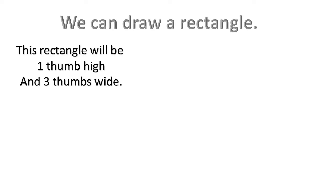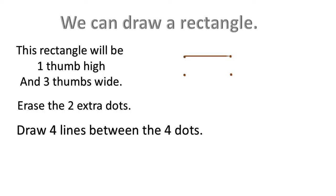We can draw a rectangle. This rectangle will be one thumb high and three thumbs wide. Erase the two extra dots. Draw four lines between the four dots.